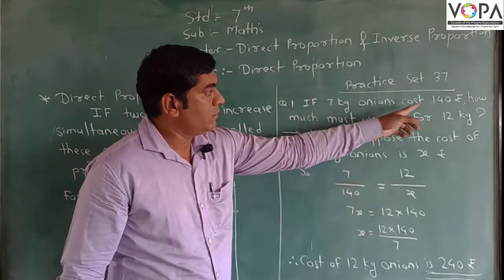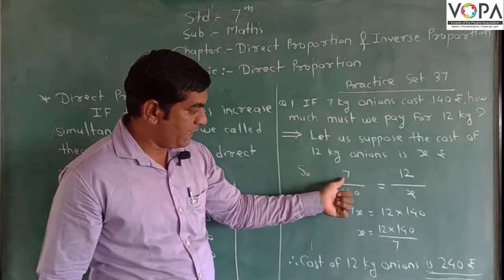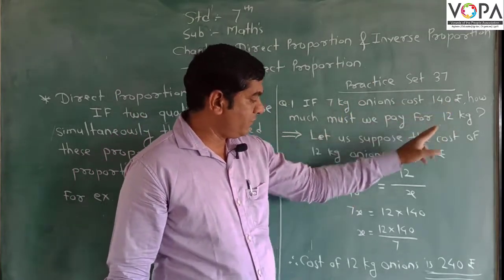So right now, the number of onions - how many kg? 7 kg. So we write here 7. How much cost we pay? 140.